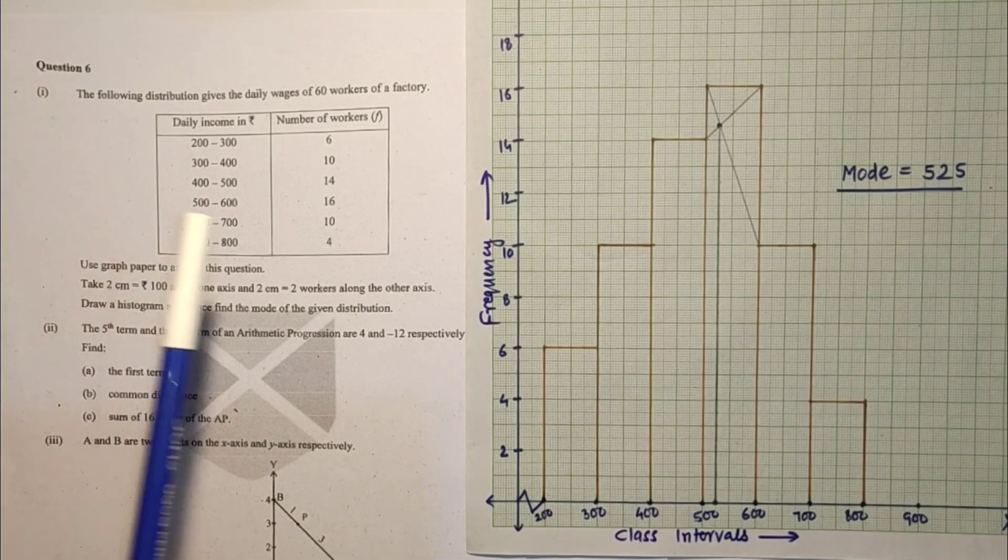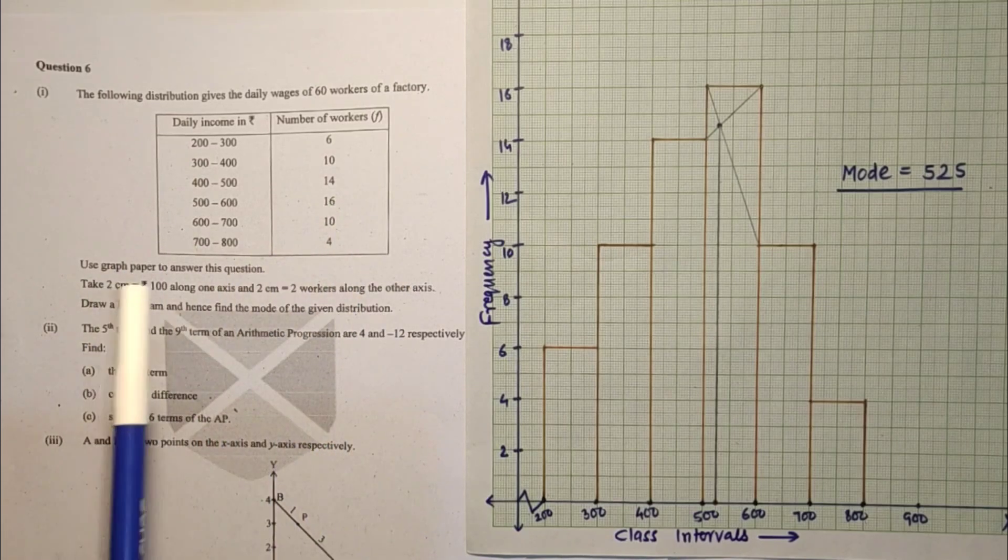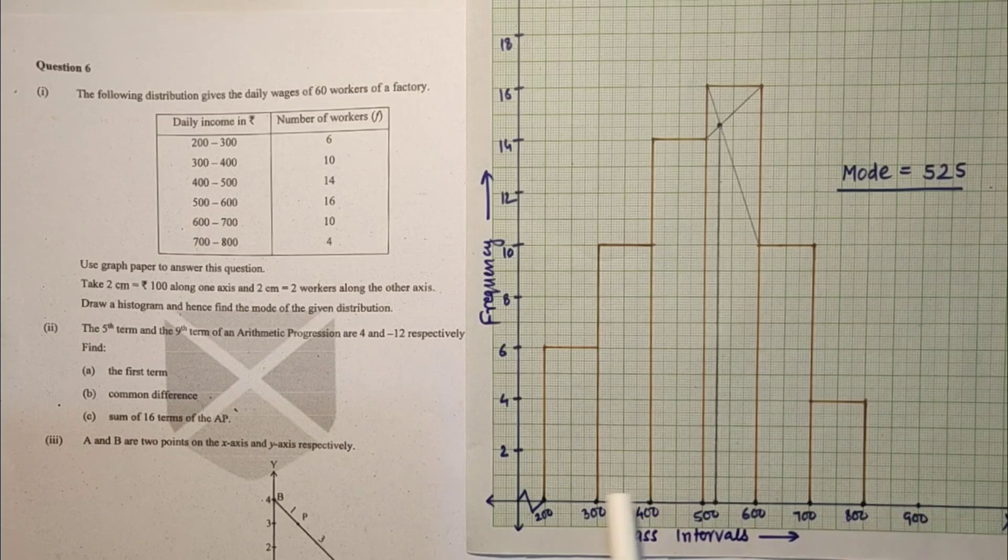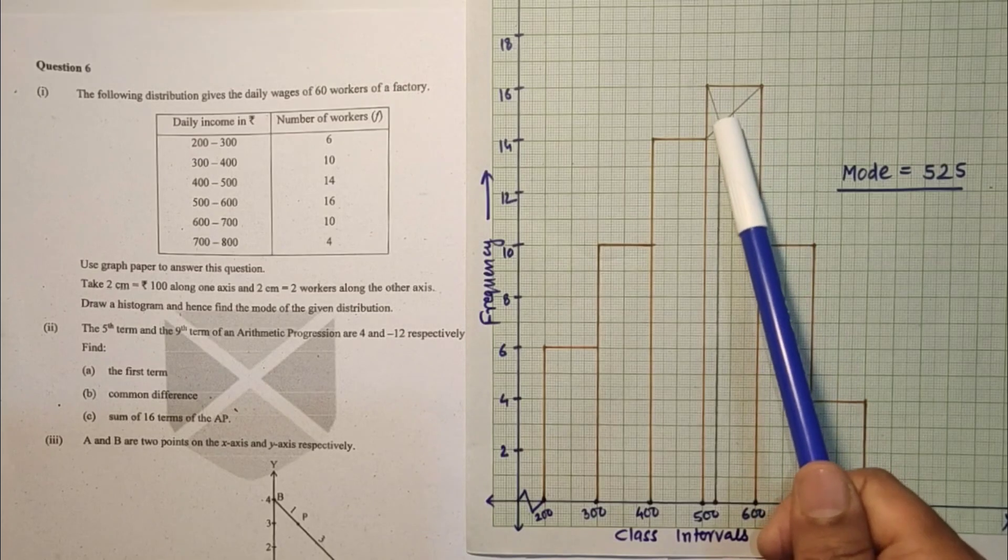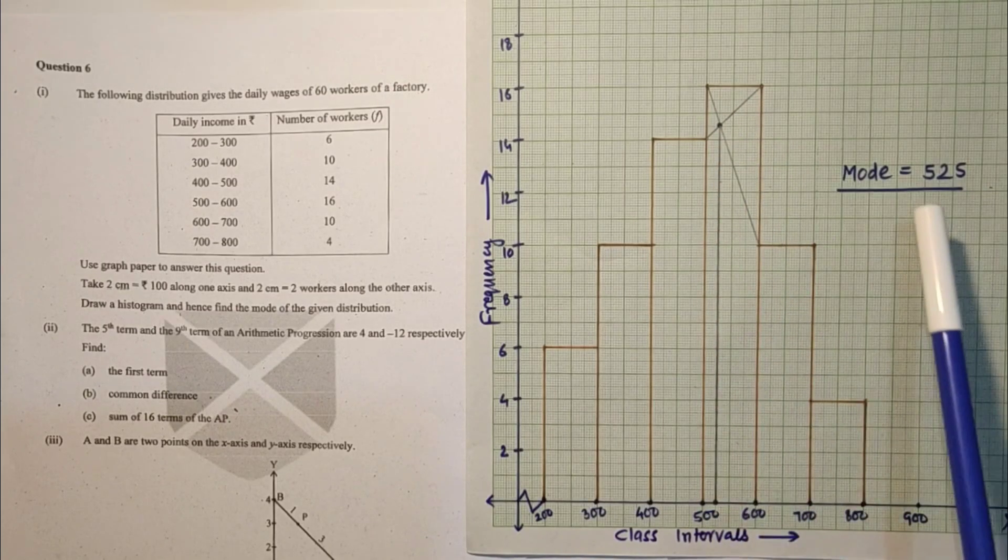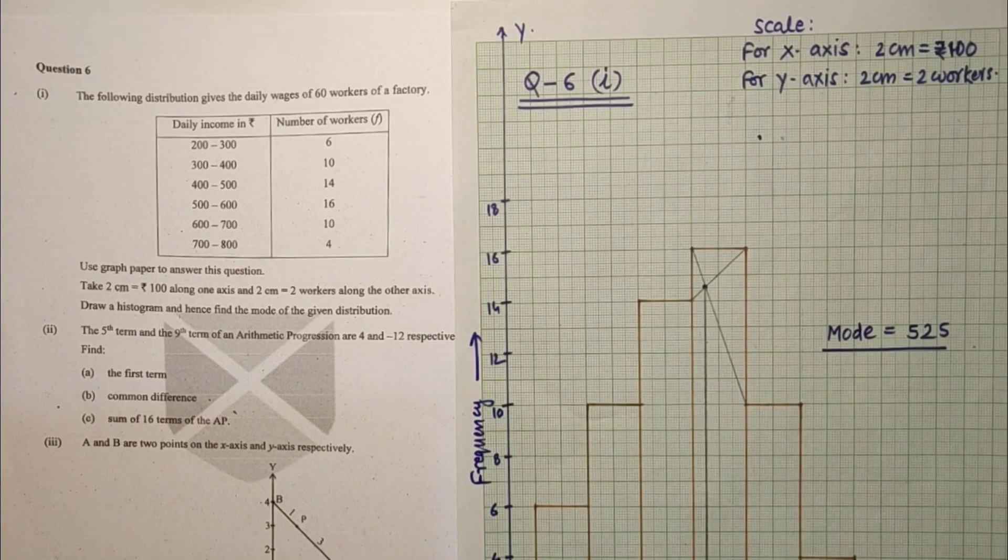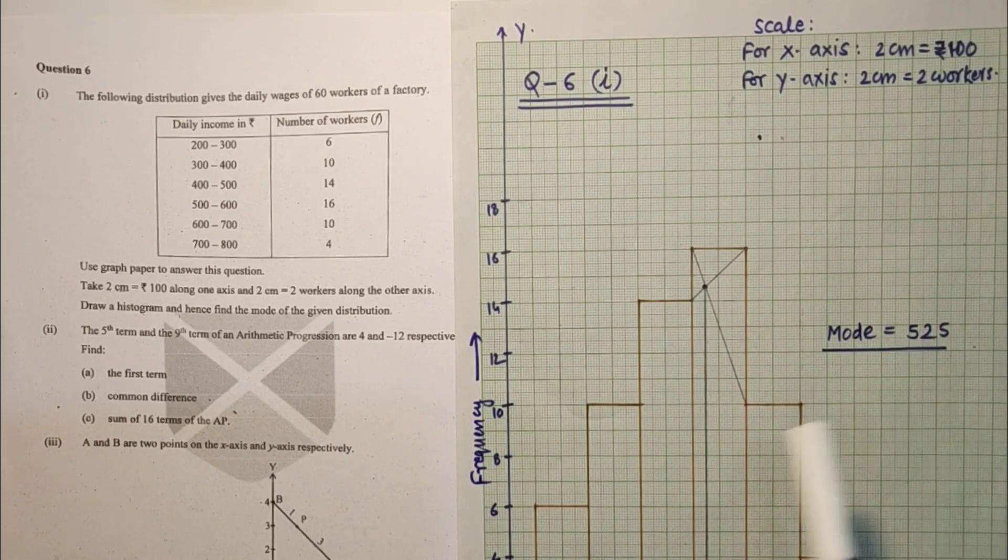Question number 6 first sub part. We have to draw the histogram and from histogram find the mode of the distribution. We have to make kink because it is starting from 200, 200 to 300, 400. The tallest is here, draw this, this is the point of intersection. From here mode is 525. We have to write down the scale, class interval, frequency. Answer is mode is 525.